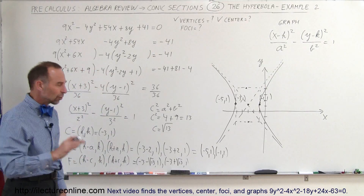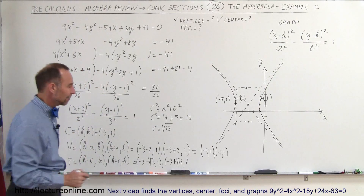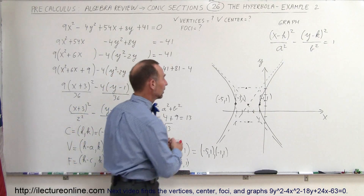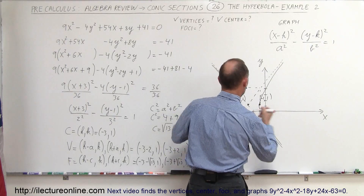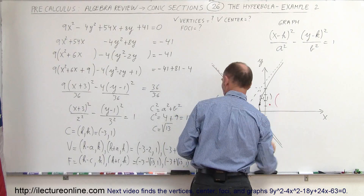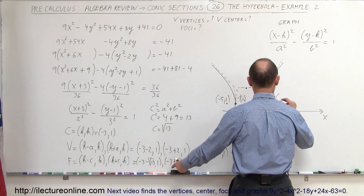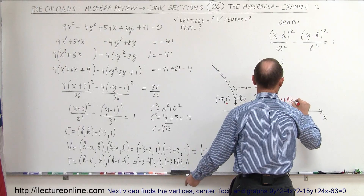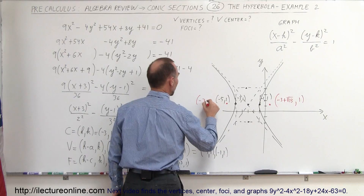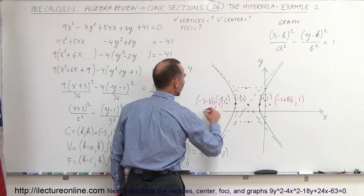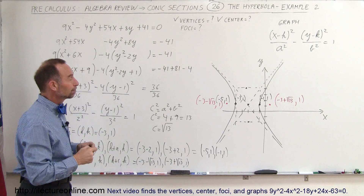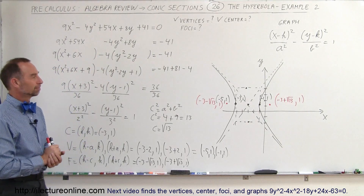The square root of 13 is somewhere between 3 and 4, about 3.5. So one focus is approximately at minus 3 plus root 13 (roughly minus 0.5) and 1, and the other is at minus 3 minus root 13 (roughly minus 6.5) and 1. Those are the two foci of the hyperbola, and that's how we find the foci.